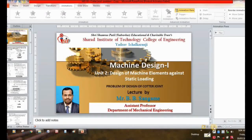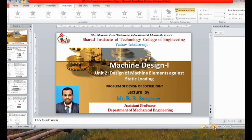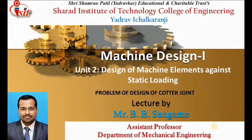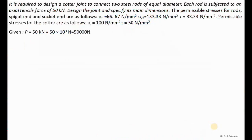Hello everyone, this is BB Sangmay and today I am going to discuss a problem on design of a cotter joint. Here we have the numerical: it is required to design a cotter joint to connect two steel rods of equal diameter, each rod subjected to an axial tensile force of 50 kilonewton.